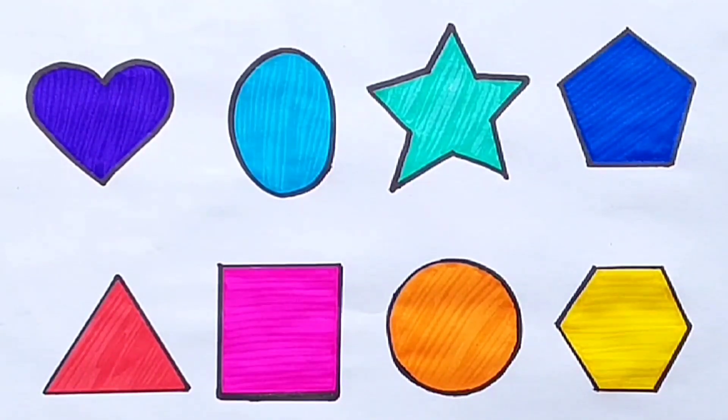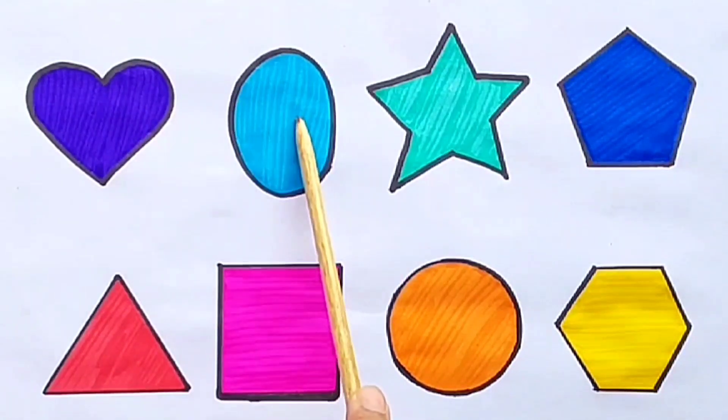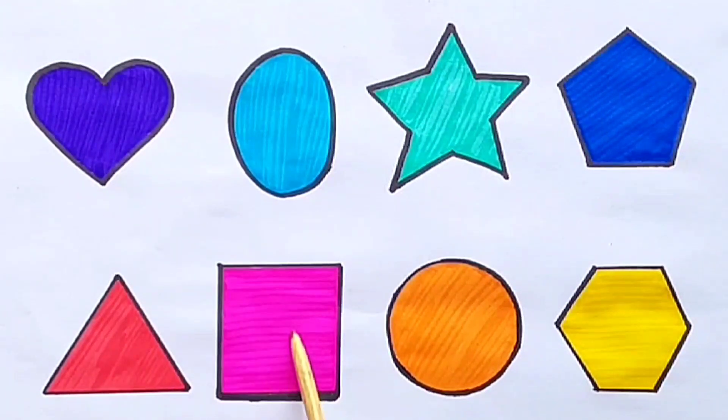Let's revise. Heart, oval, star, pentagon, triangle, square, circle.